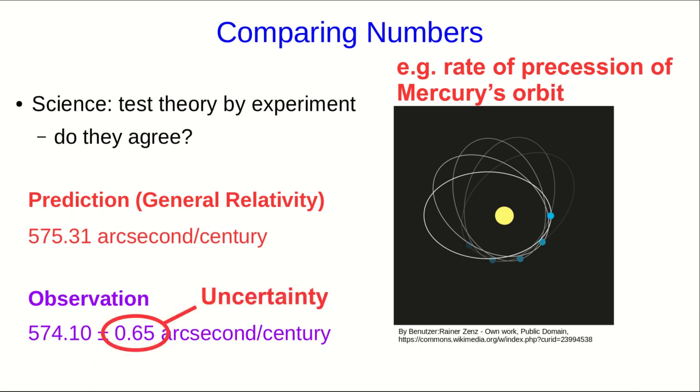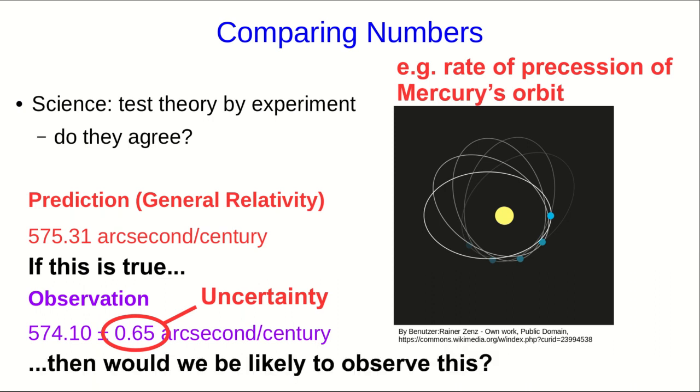We have to look at the uncertainty, which tells us that if we repeat our observations, we can expect to get answers which will differ by 0.65 or even twice that much from the observations that we've seen. The question here is, if the prediction is true, then is this observation a likely outcome of our observation process?